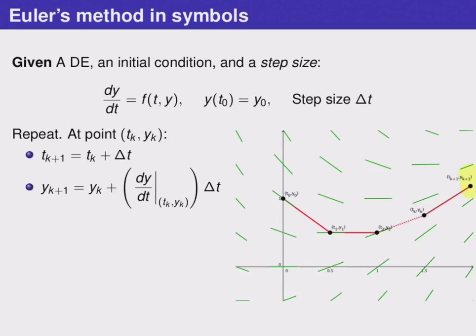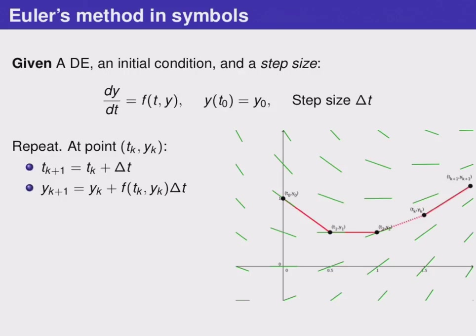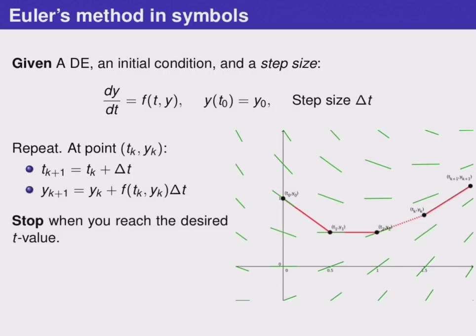If we'd like to simplify this a little bit, we can see that we're given this differential equation where the function f represents the slope. So instead of writing dy/dt at this point, we can write f of TK, YK, which represents exactly the same thing. F and dy/dt are both ways of writing the slope at a certain point. We can keep doing this until we've reached the desired T value, at which point we should stop, and we can look at that Y value as an estimate for the value of our solution.